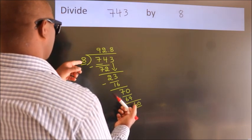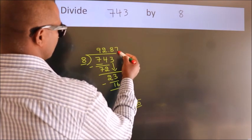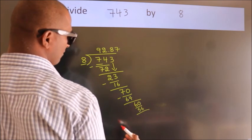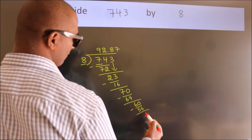In the 8 table is 8 sevens, 56. Now we subtract. We get 4.